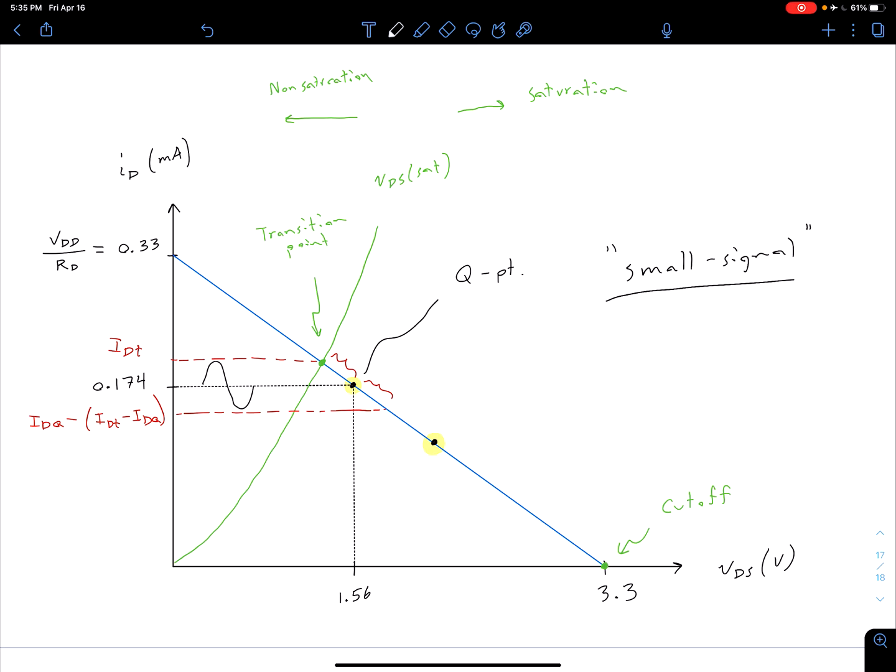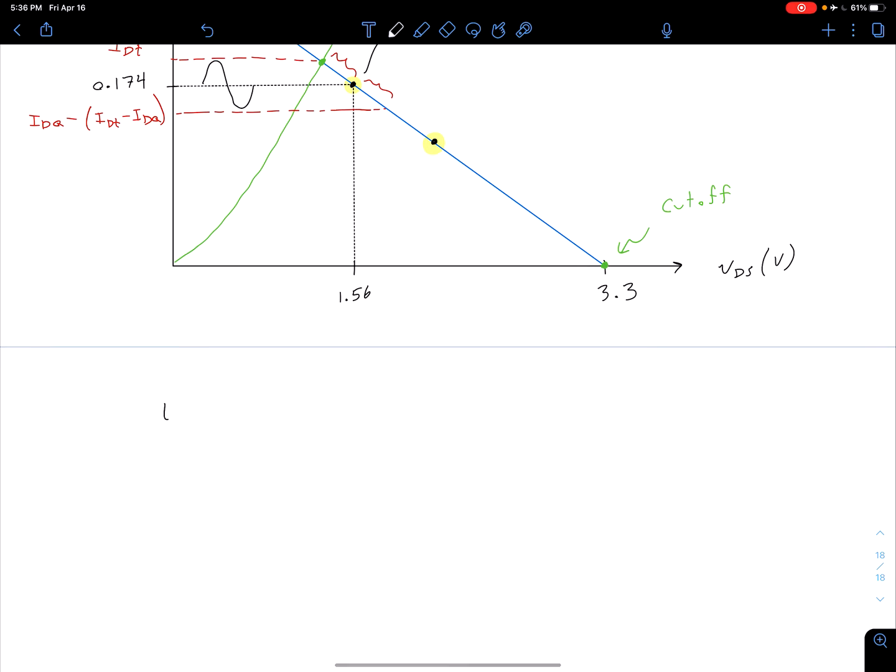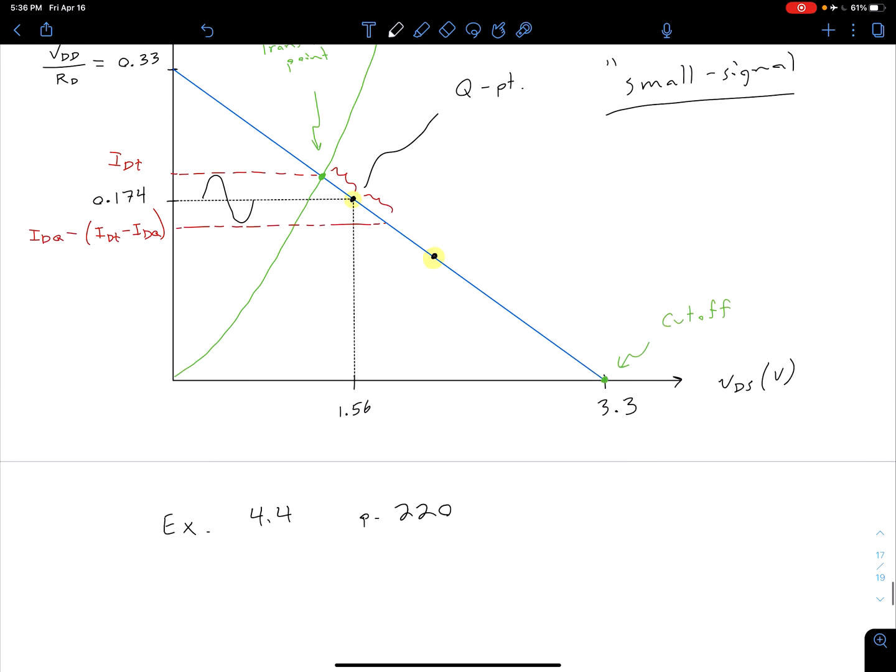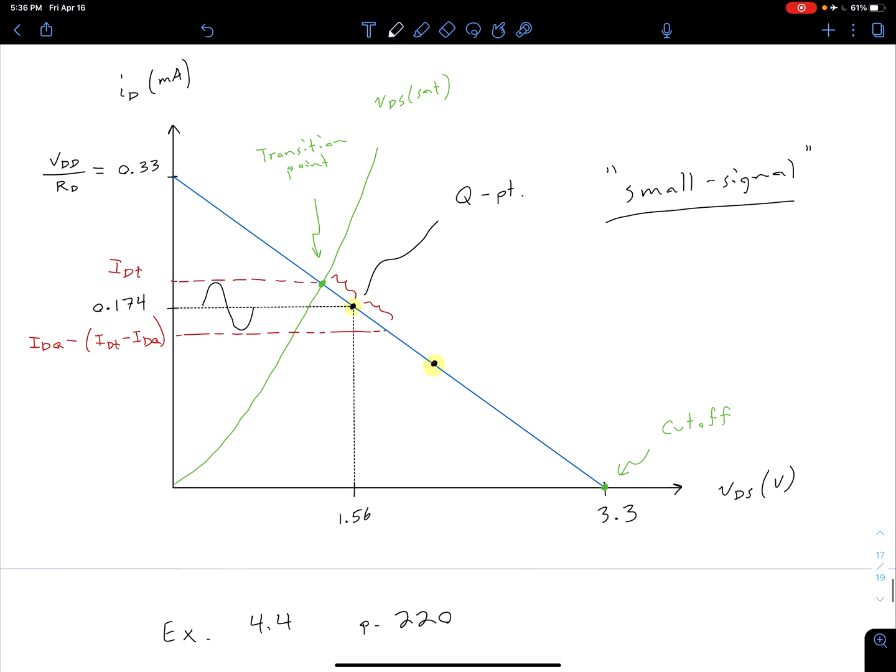So unfortunately, we don't have enough time to look at a full example with this, but let me direct you to a good example in the textbook. So example 4.4, which is on page 220 of the textbook, is a good design problem where the ultimate goal is to put the Q point more in the middle of the saturation region as we see here on this load line.